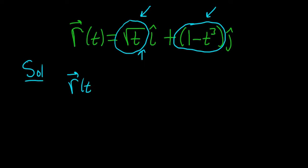So r of t is equal to, well there's really a 2 here and there's really a 1 here, so this is really t to the 1 half i hat plus 1 minus t cubed j hat. So all we've done so far is simply rewrite the function so we can take the derivative.